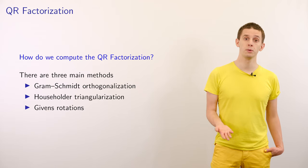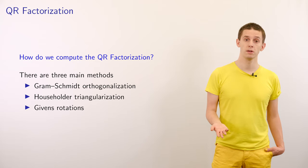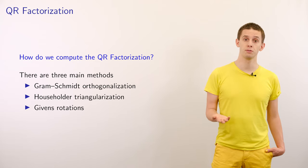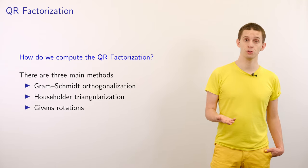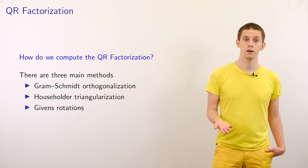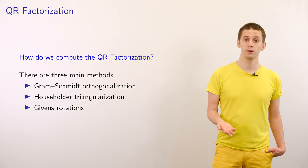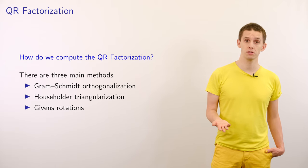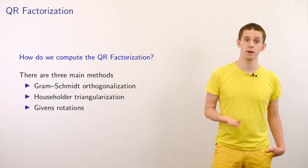So how do we compute the QR factorization? Well, there are a number of methods we can use to do this, and in this course we're going to look at three different approaches. We're going to look at Gram-Schmidt orthogonalization, Householder triangularization, and Givens rotations. Each of these methods has their own strengths and weaknesses. In the next three videos in this course, we'll discuss these three methods in turn.